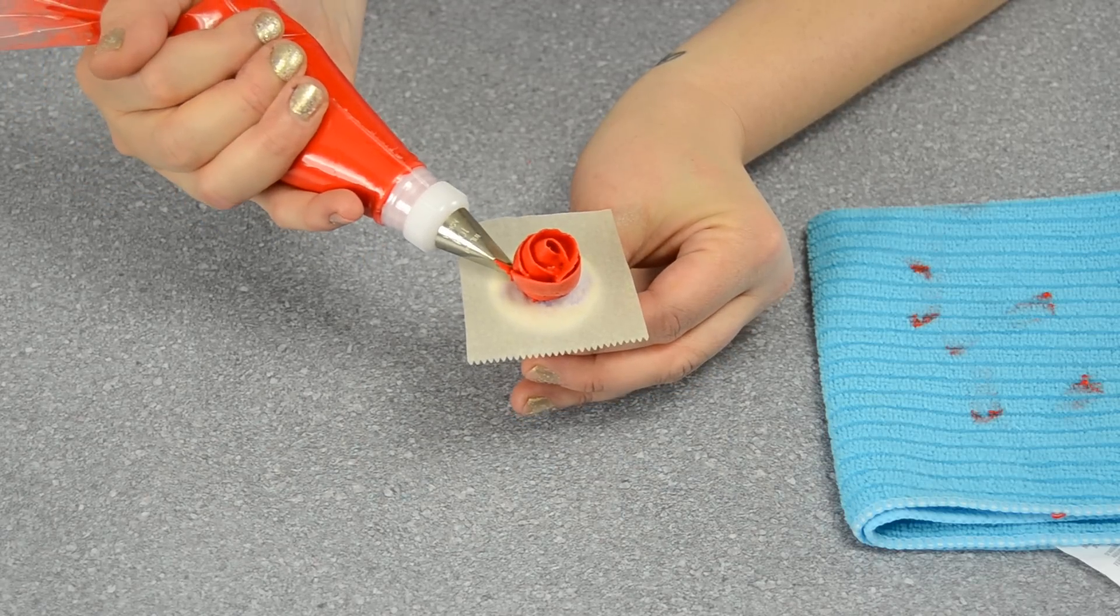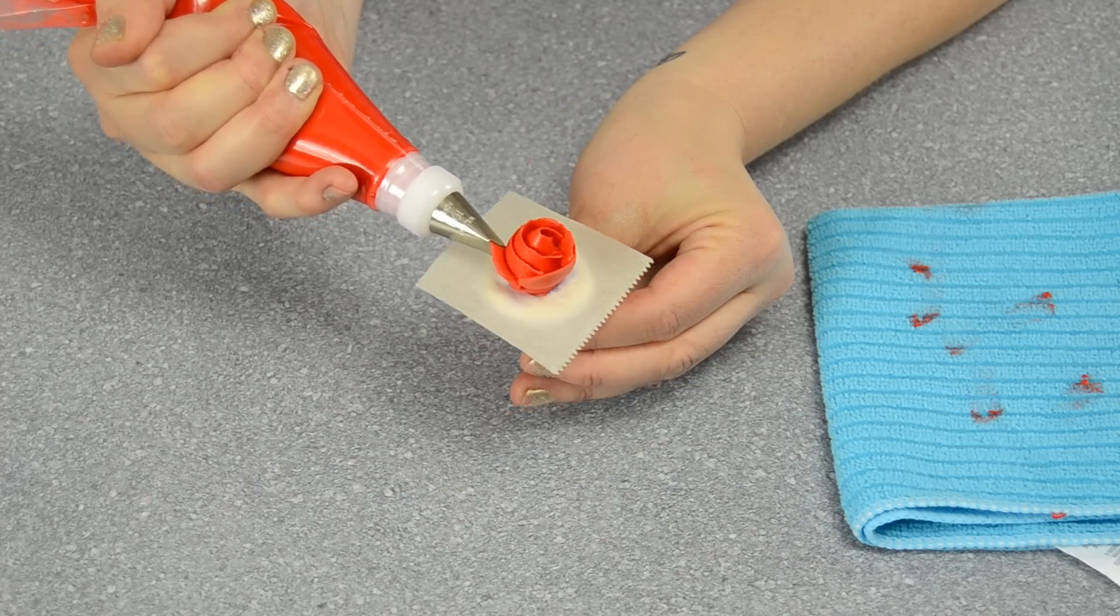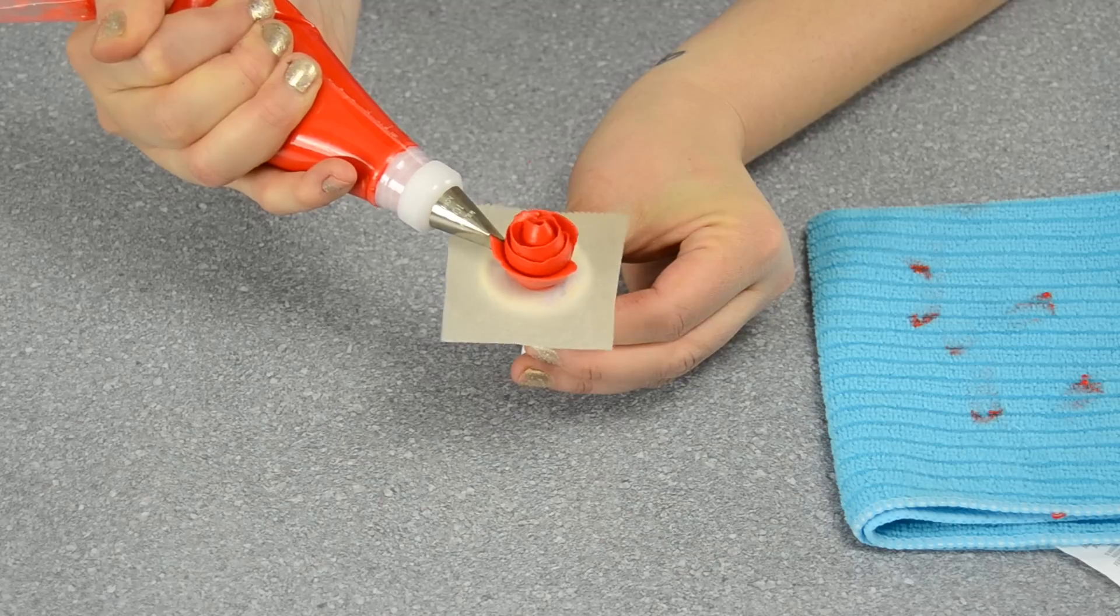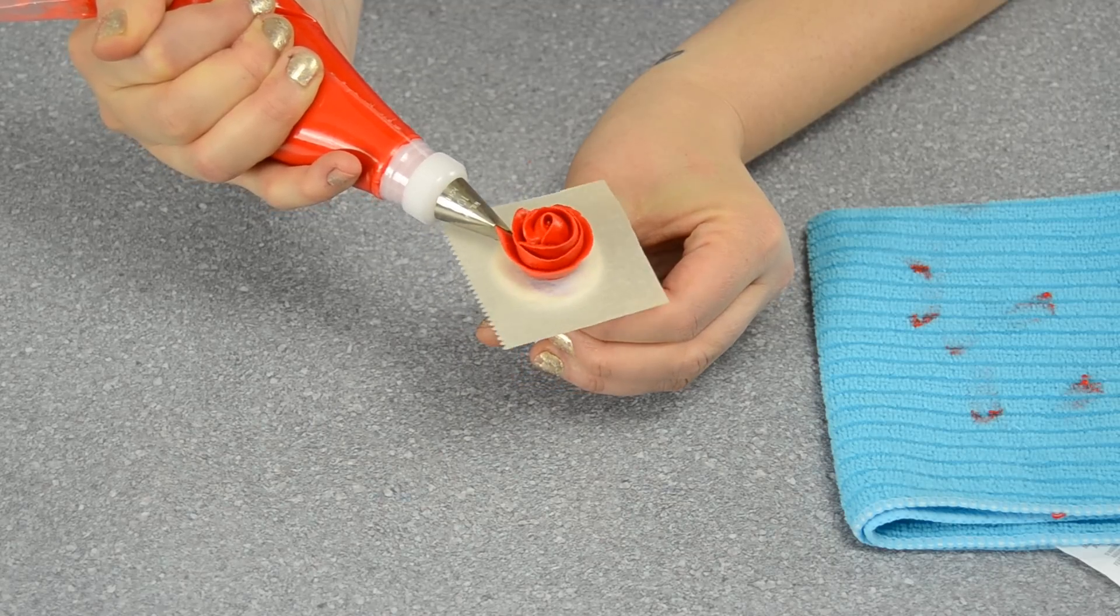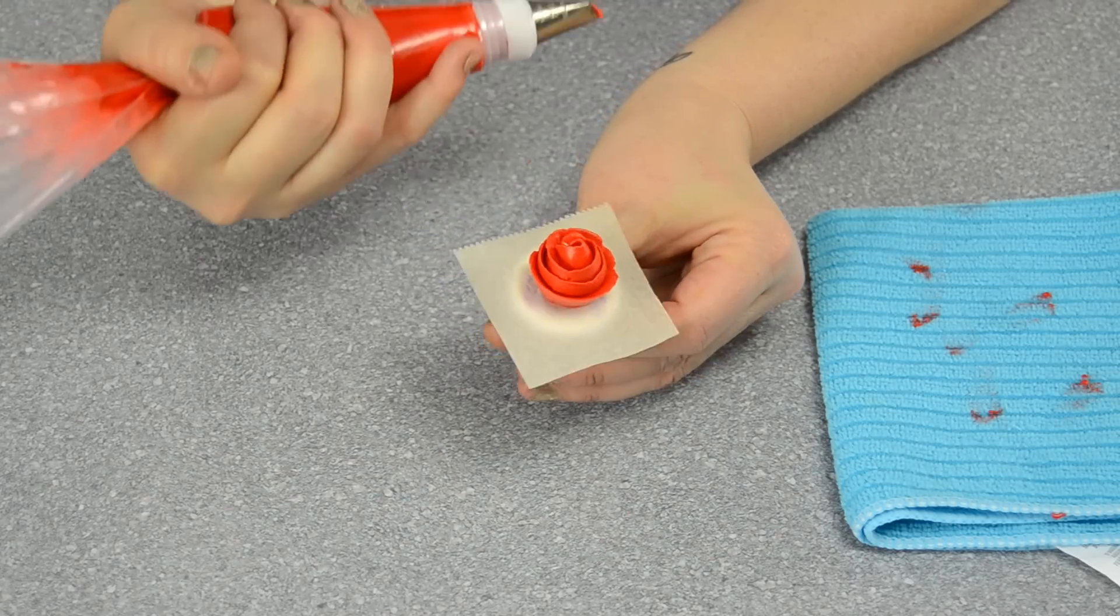Quarter turn first, start one more time. Attach the icing, squeezing nice solid motion, and coming back to the start, squeezing down and away. So that is how you make a ribbon rose out of royal icing.